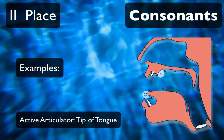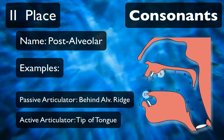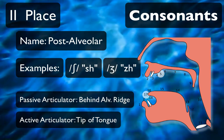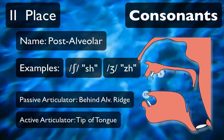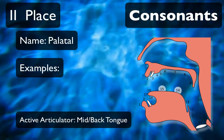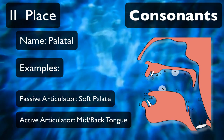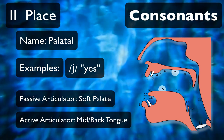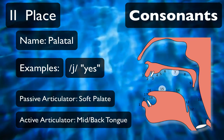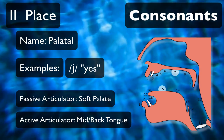The next place is just a little bit behind that — maybe a quarter of an inch or half a centimeter. If you move your tongue just a little bit back, instead of getting /s/, you get /ʃ/ as in 'show' or /ʒ/ as in 'pleasure'. The next places involve the middle or back part of the tongue as the active articulator. Place number six is palatal — this is the soft palate right in the middle of your mouth.